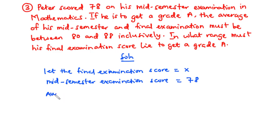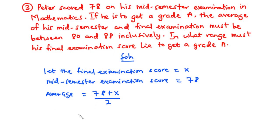The average of the two scores is (78 + x) / 2. We are told it should be between 80 and 88 inclusively, so we write the compound inequality: 80 is less than or equal to (78 + x) / 2, which is less than or equal to 88.